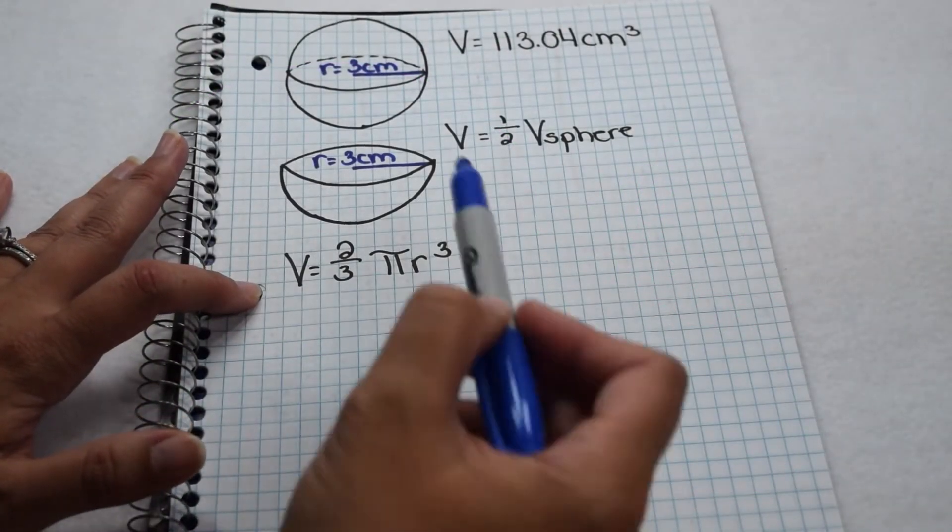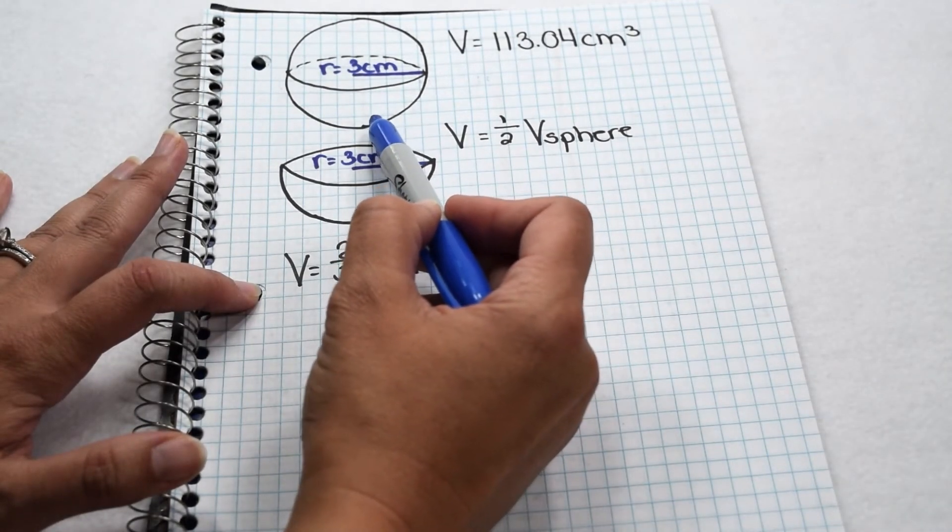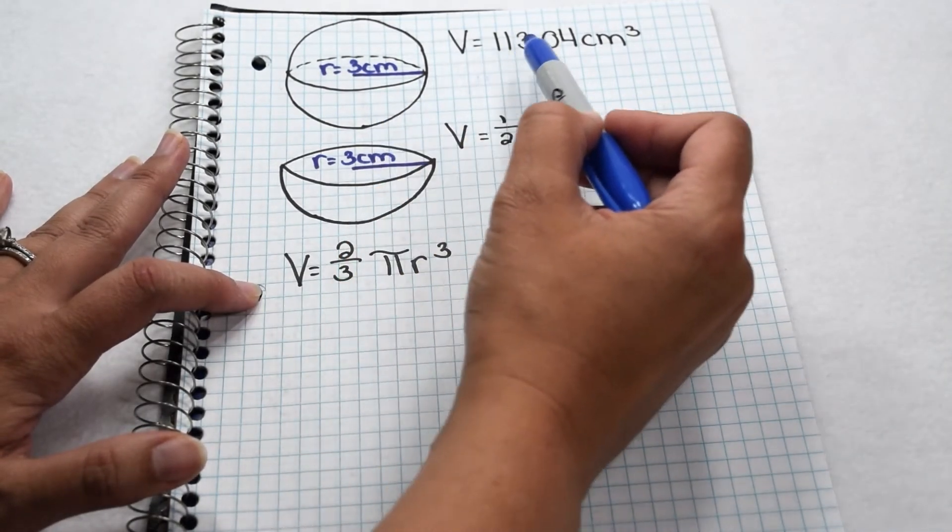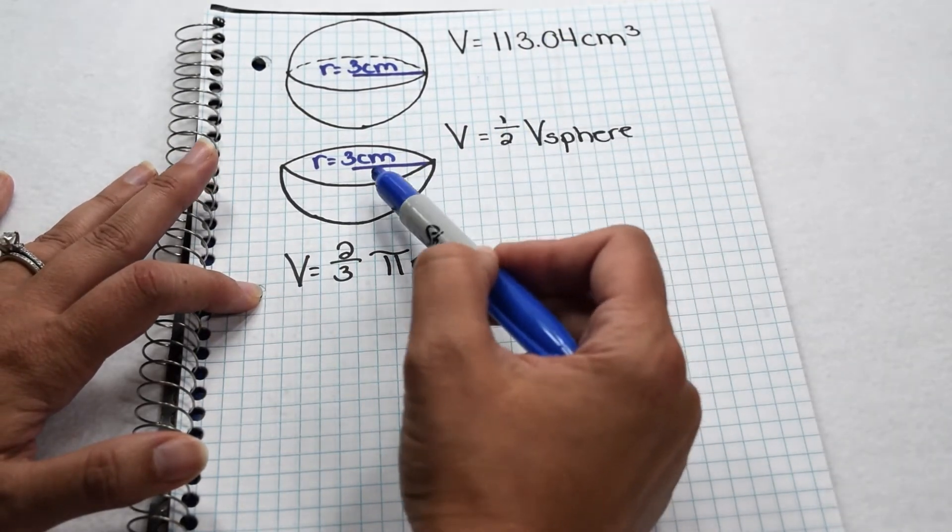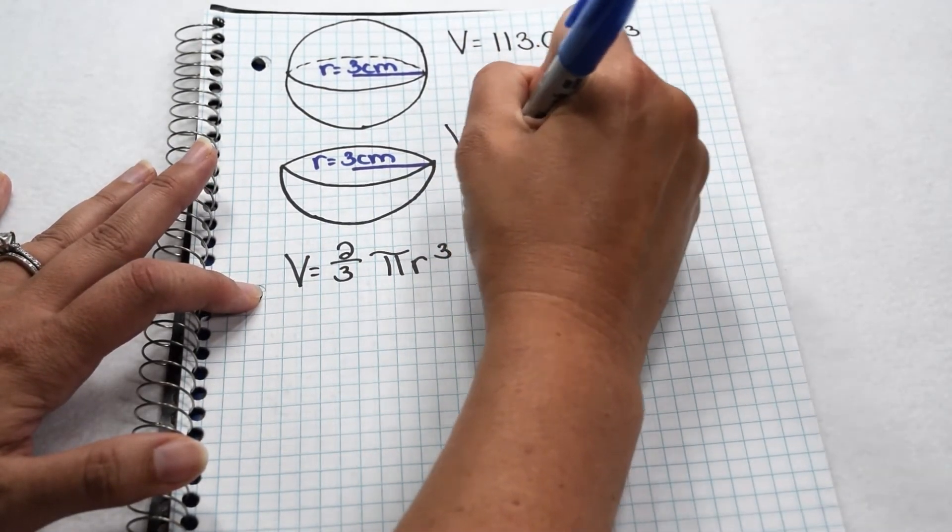Let's test to see if our equation is true. In our previous video about spheres, we saw the volume of this sphere with a radius of three centimeters comes out to be 113.04 cubic centimeters. That means the volume of the hemisphere would be half that.